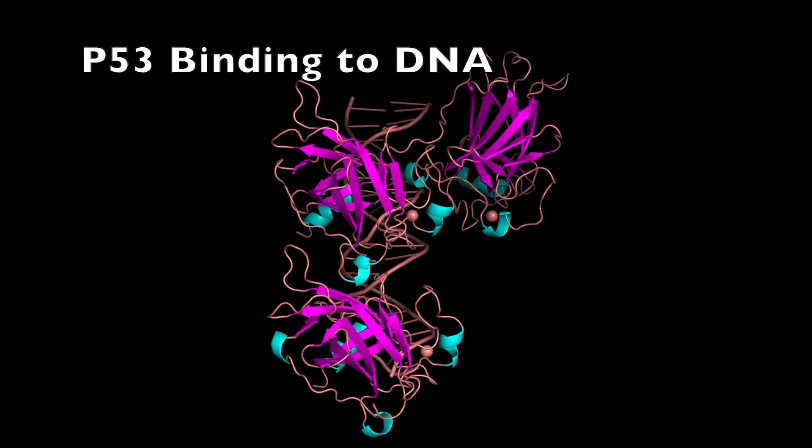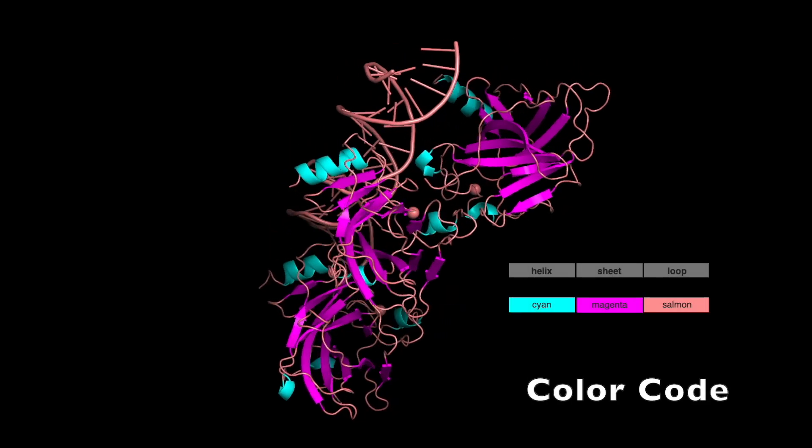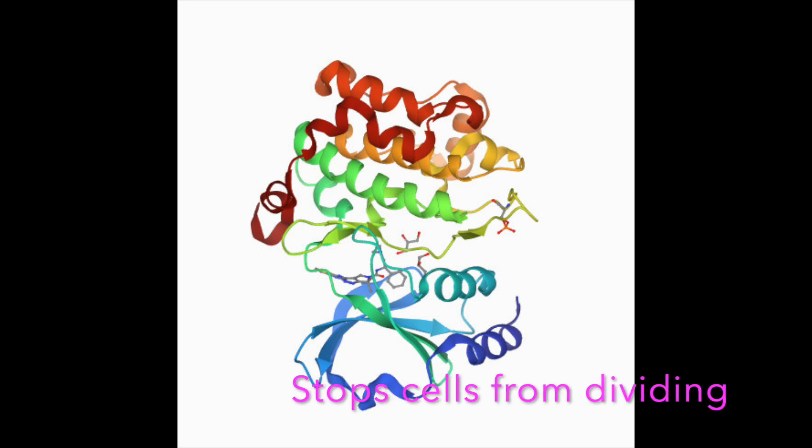Here is the structure of p53. This structure shows p53 binding to DNA. One of the genes activated by p53 is the p21 gene. When cells make p21, this protein can stop them from dividing. But how does p21 do this?